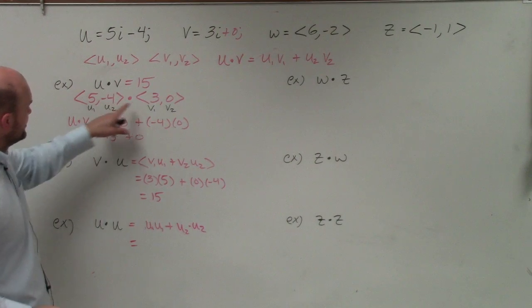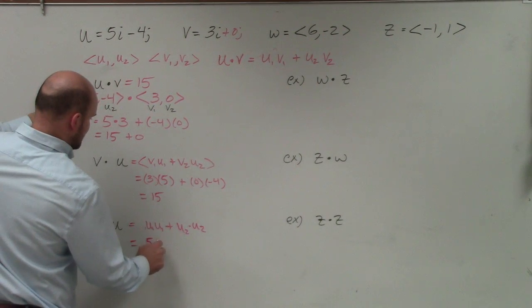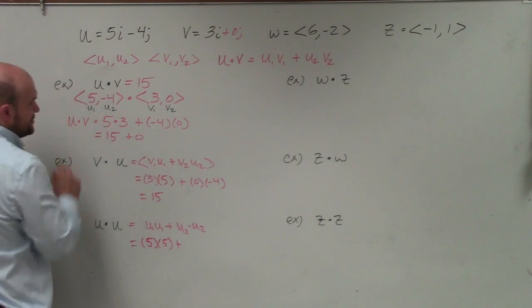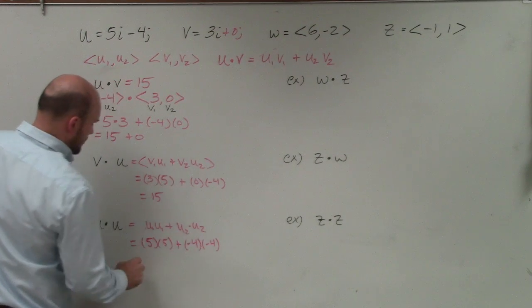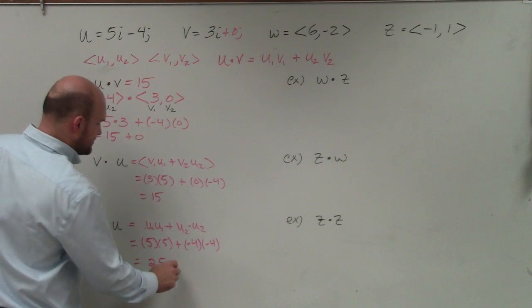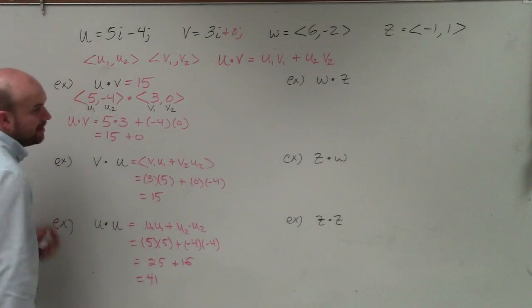So let's go and take a look at vector u here. So here I have 5 times 5 plus u2 times u2, which would be negative 4 times negative 4. Well, 5 times 5 is going to be 25, and negative 4 times negative 4 is going to be a positive 16. So that dot product equals 41.